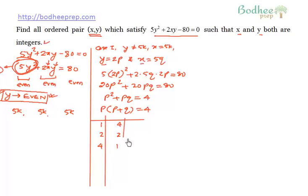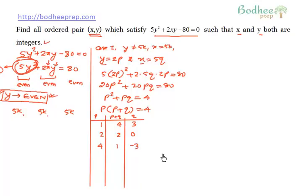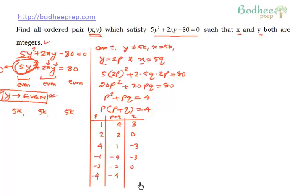Let me make a small table with columns for p, (p + q), and q. If p = 1 and (p + q) = 4, then q = 3. If p = 2 and (p + q) = 2, then q = 0. If p = 4 and (p + q) = 1, then q = -3. We can also take the corresponding negative values: if p = -1, then (p + q) = -4; if p = -2, then (p + q) = -2; if p = -4, then (p + q) = -1. The corresponding values of q would be -3, 0, and 3.